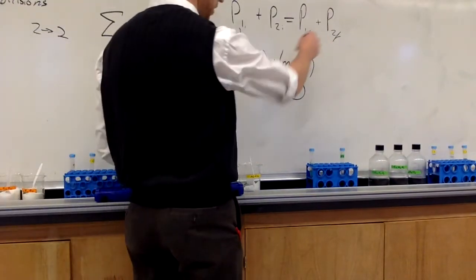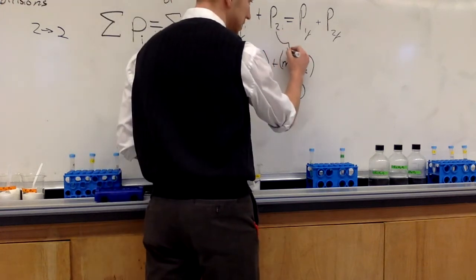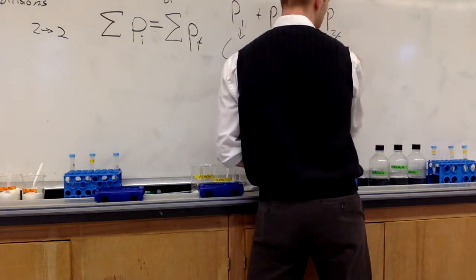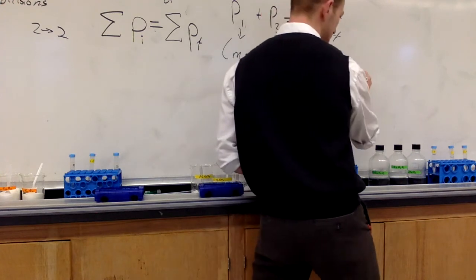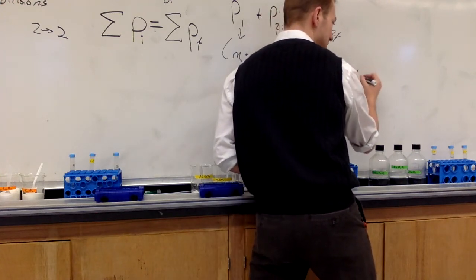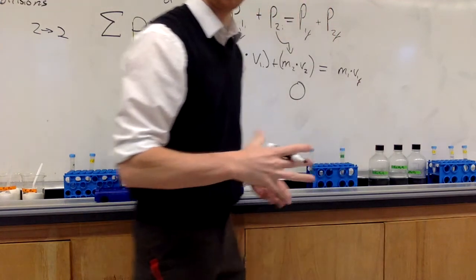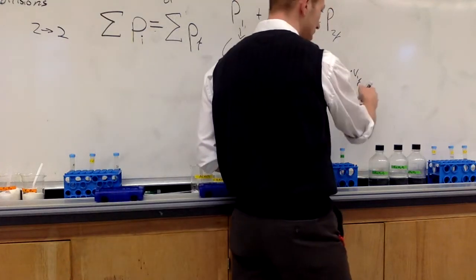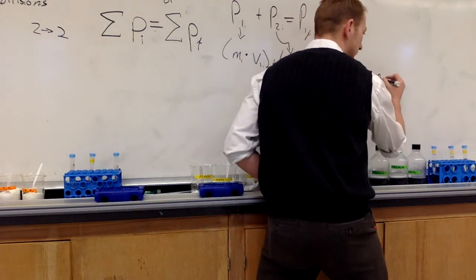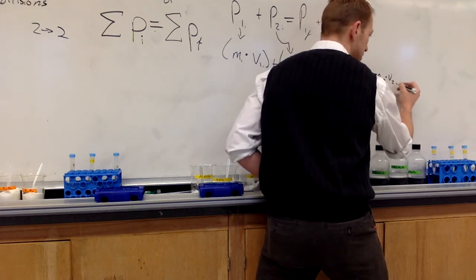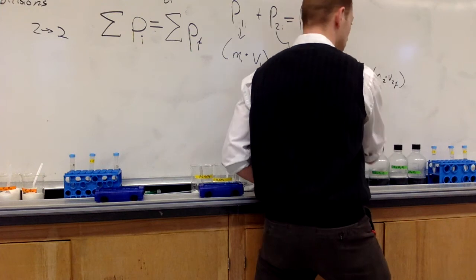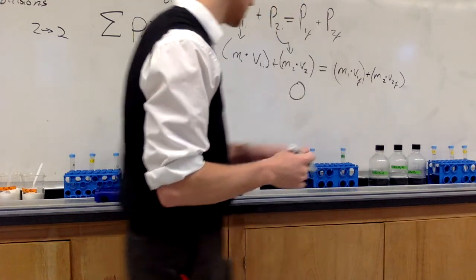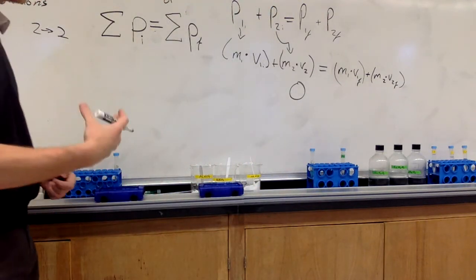Now we break out the second half of the equation. This is P1 final, this is P2 final — mass one times velocity one final. That car was still moving only slightly afterwards. So it's mass one times v1 final plus mass two times v2 final. And the second object's velocity was not zero after the collision — it was actually moving — so we have some velocity there that we're going to try to figure out.